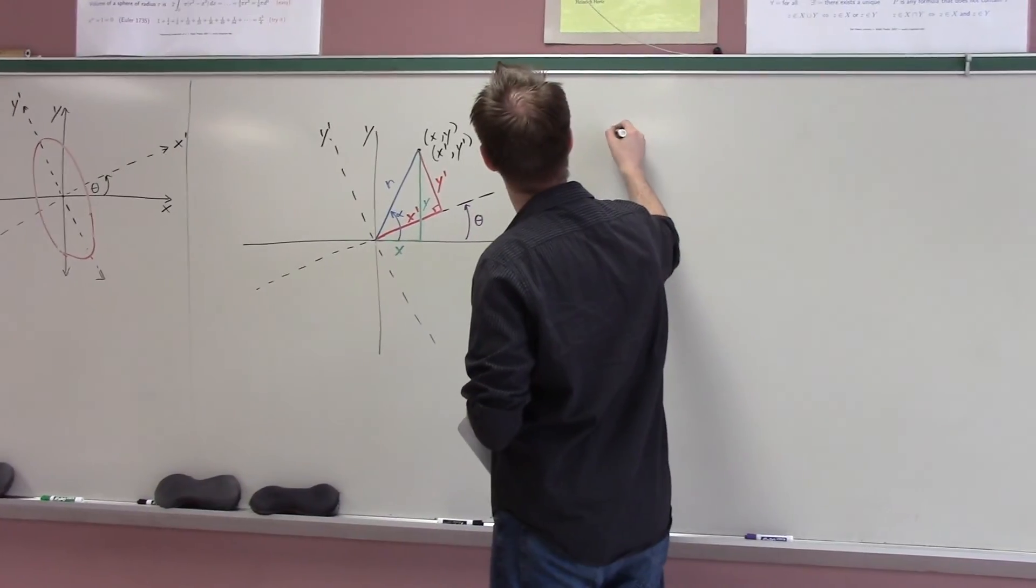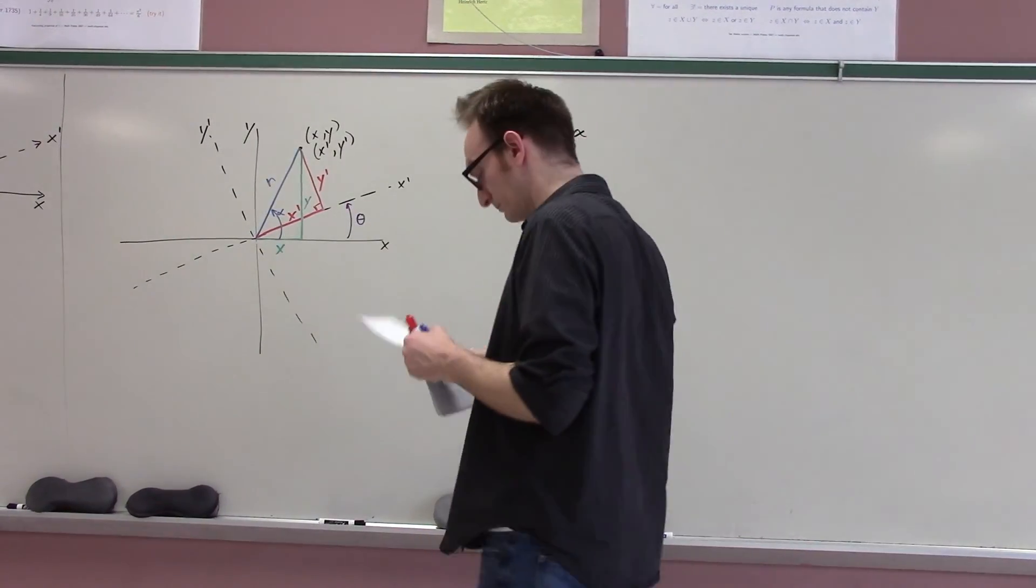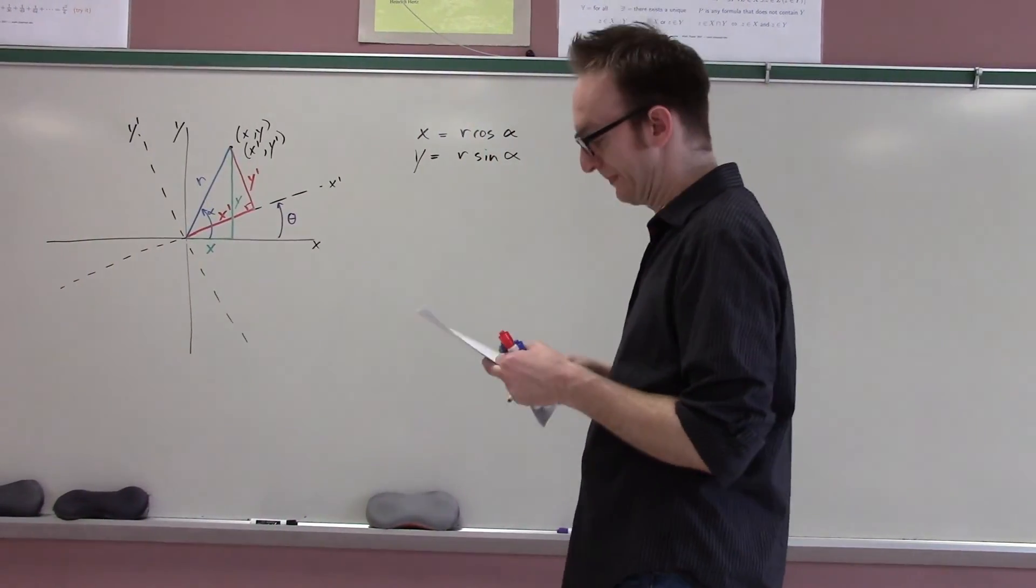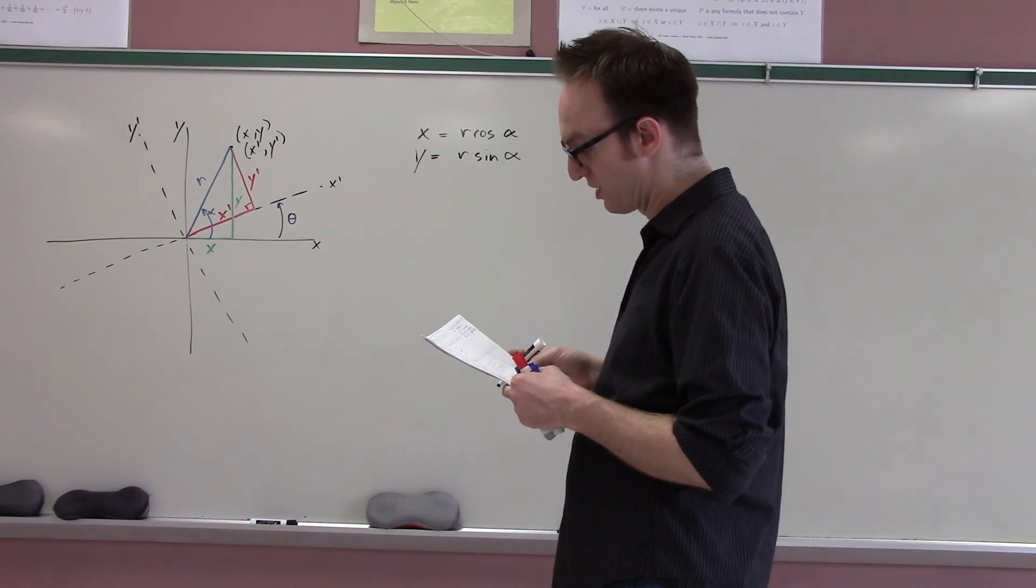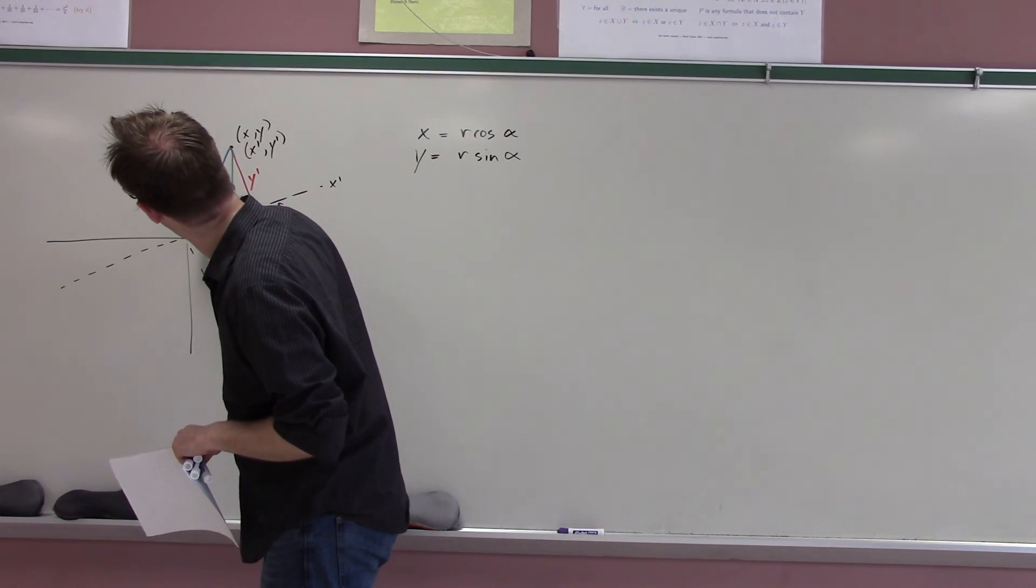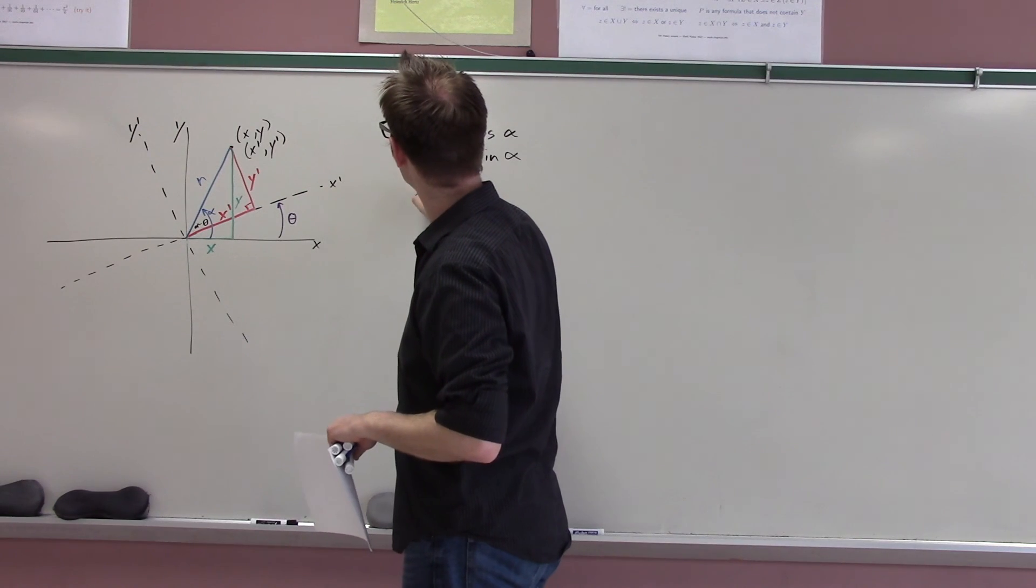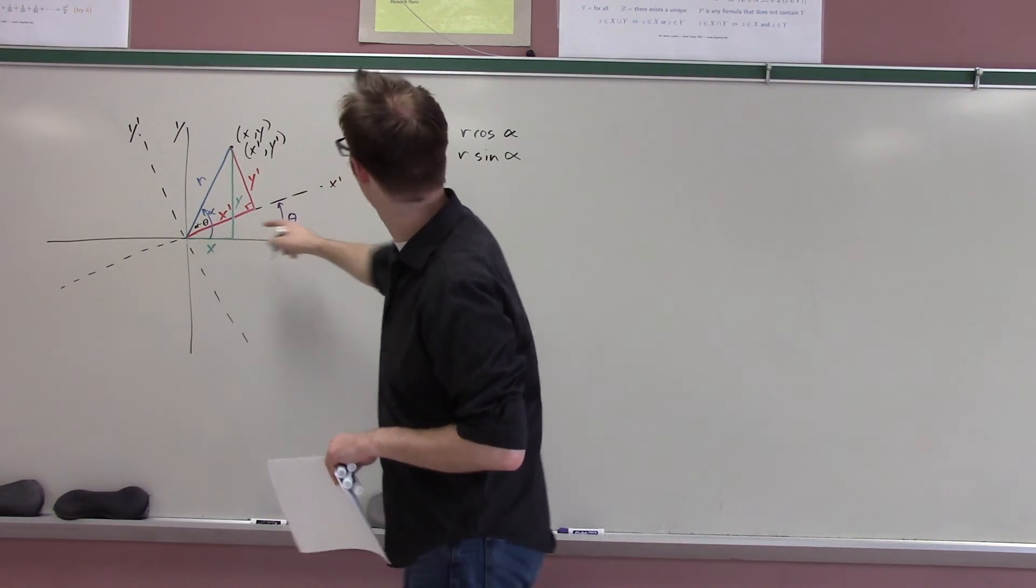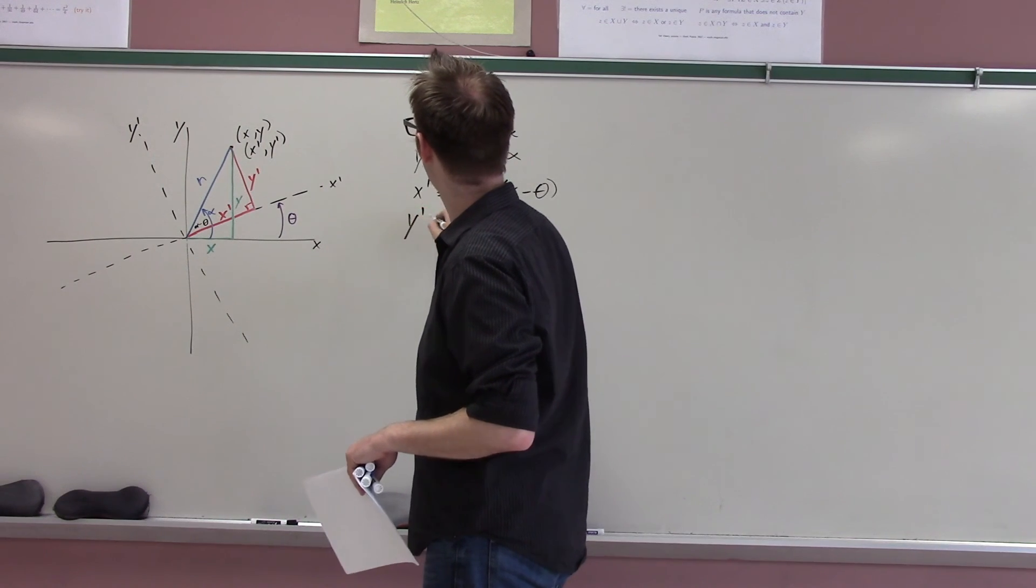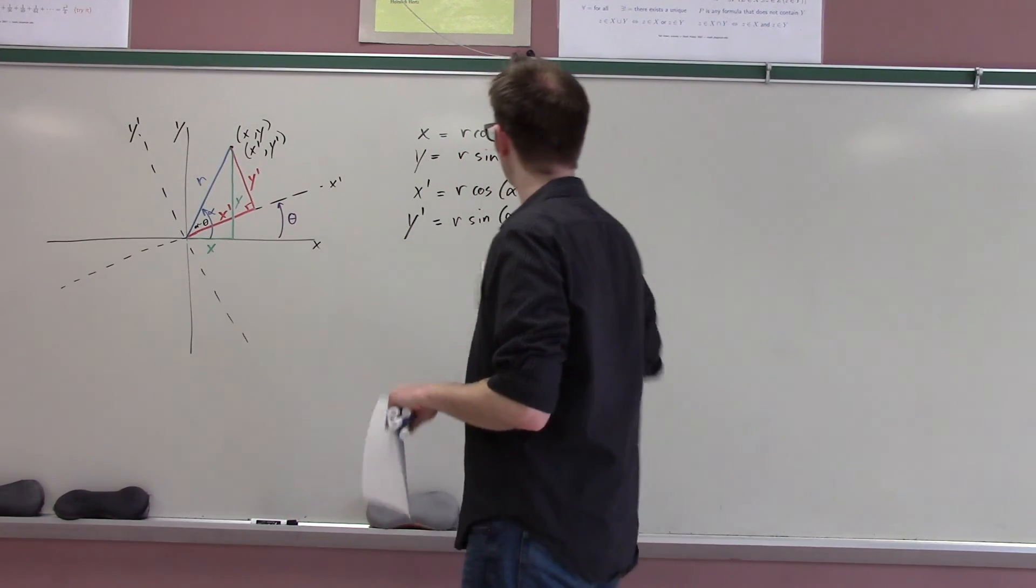All right. So, let's come up with an equation for x and y. Well, let's just do it in polar, right? Okay. So, x is just r cosine alpha. And y is just r sine alpha. Okay. That's pretty straightforward. And then I can also give x prime y prime coordinates. Because what is this little angle here? This little angle here is alpha minus theta. Right? Therefore, I can say that x prime is just r cosine of alpha minus theta. And y prime is r sine of alpha minus theta. Okay. All right.